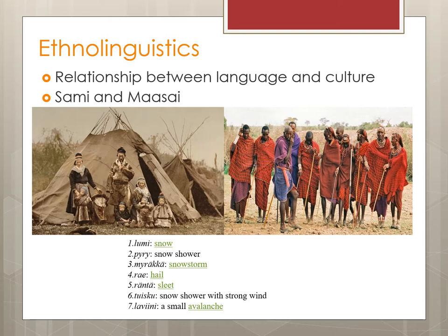Here are just some examples of those snow words. The other people pictured here are the Maasai, an African culture for whom cattle are extremely important. A boy getting his first cow is a major event in his life. The Maasai have over 200 to 400 words — depending on the particular group — that describe cattle, again demonstrating how language and culture can be deeply intertwined. Things that are important to a culture tend to have more words to describe them.